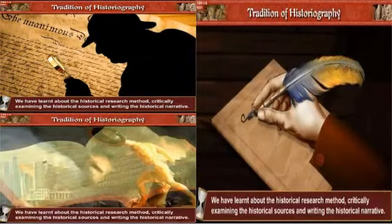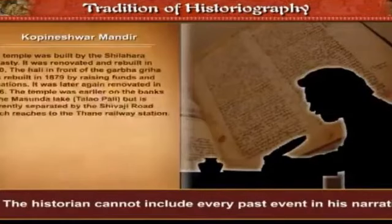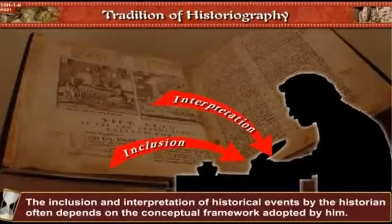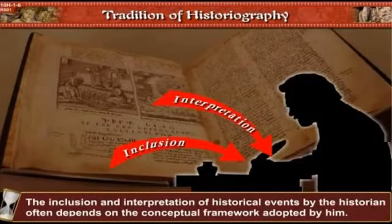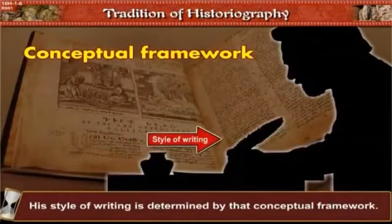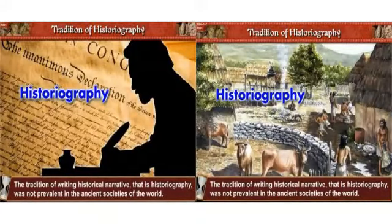We have learnt about historical research method, critically examining historical sources, and writing the historical narrative. A scholar who writes such a narrative is a historian, and this practice is known as historiography. The historian cannot include every past event in his narrative; the inclusion and interpretation of historical events often depends on the conceptual framework adopted by the historian.